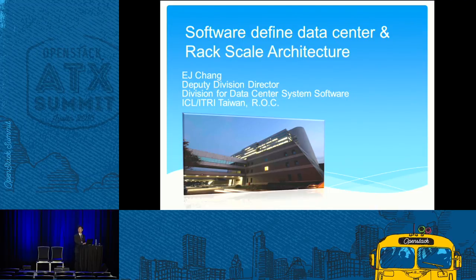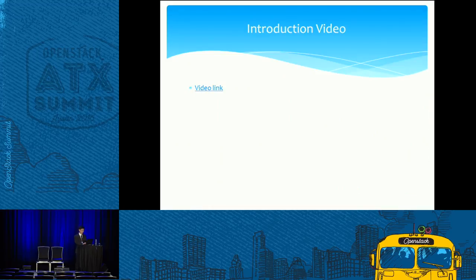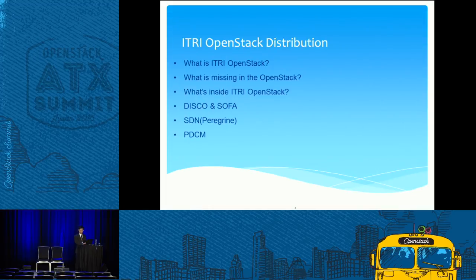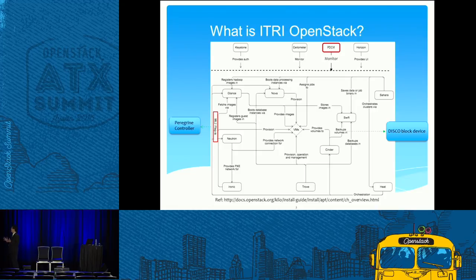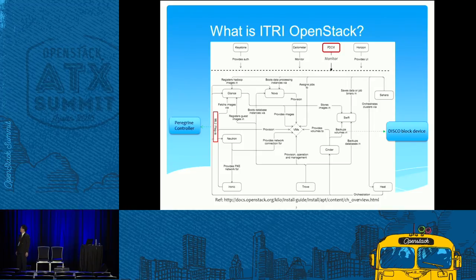Because we have another speaker who also has 20 minutes, I only have about seven minutes left, so I have to skim through some things. What is E3 OpenStack? Here you can see that most of the core OpenStack components are still there, but what we're doing is offering the DISCO block device through the Cinder plugin, the Peregrine controller adding SDN software-defined networking through the Neutron plugin, and also PDCM for monitoring. We also do HA for every component inside OpenStack as well as for our DISCO and Peregrine.